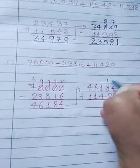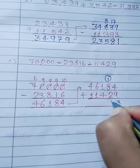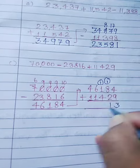उसके नीचे लिख के हम इसको column में add कर देंगे. 9 plus 4, 13, carry 1. 8 plus 2, 10, carry 1, 11. 4 plus 1, 5 and 6, 7 and 5.